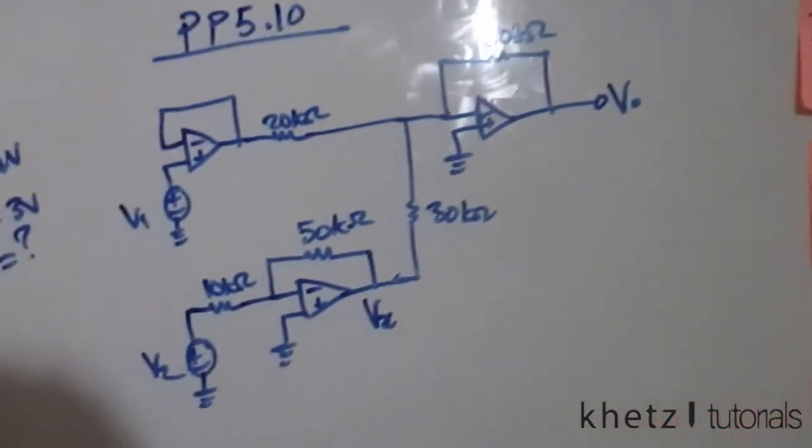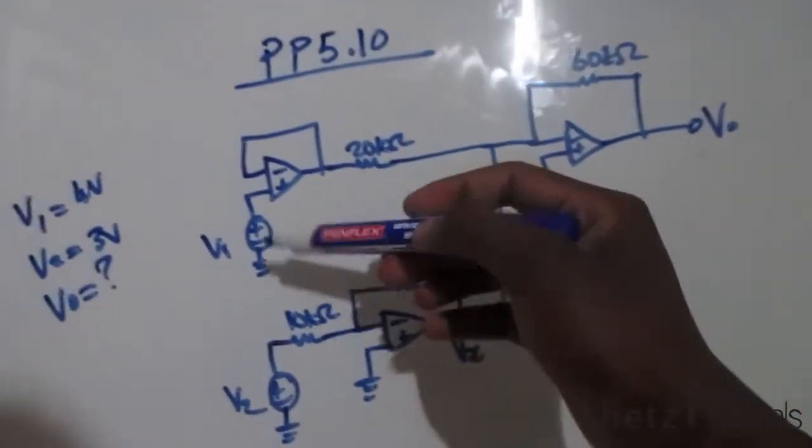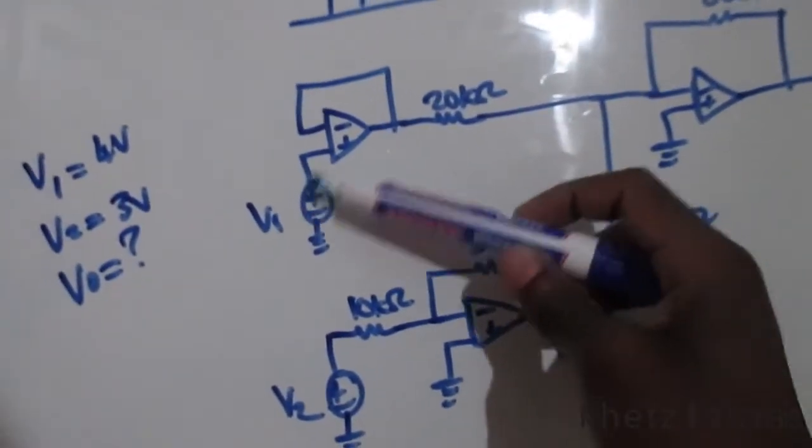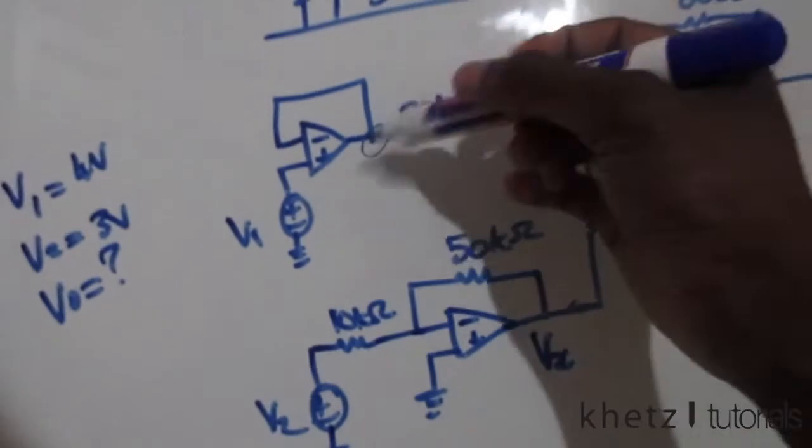So this is a buffer, it directly translates its input to the output so at that point we also have V1, which has a value of 4 volts.